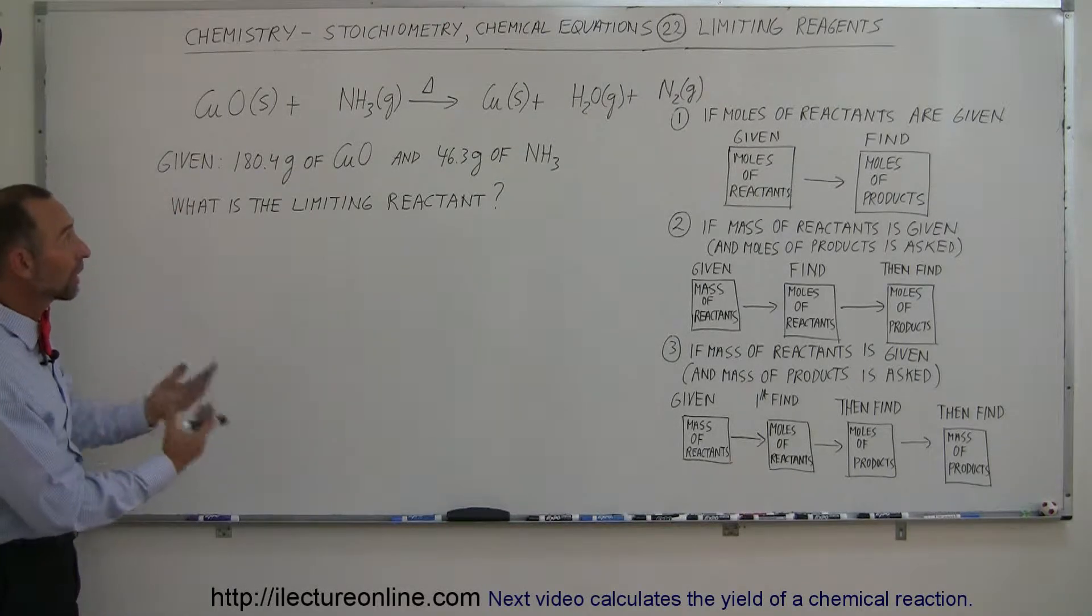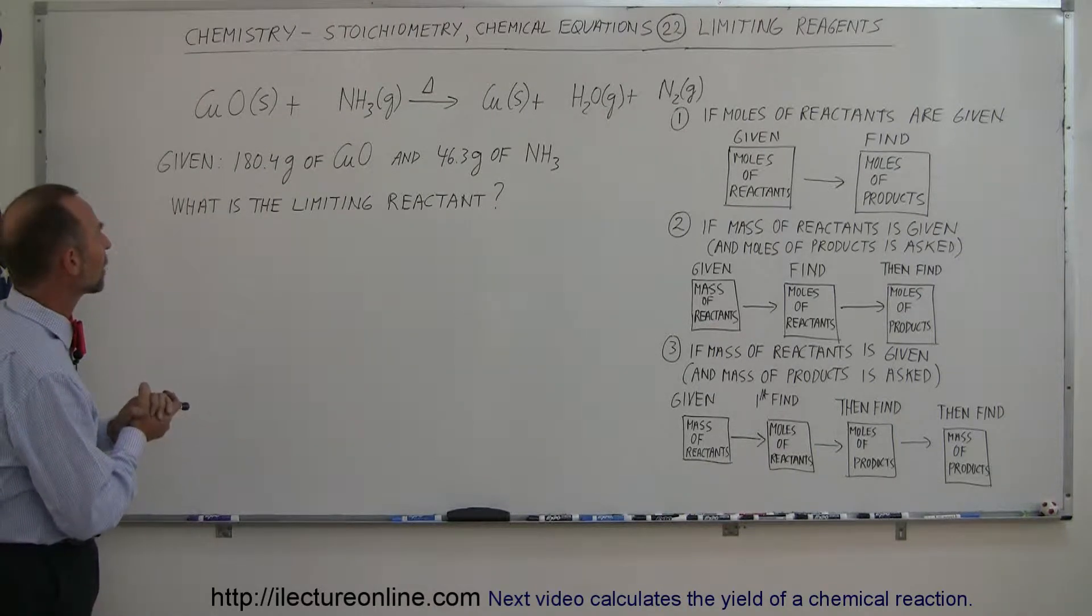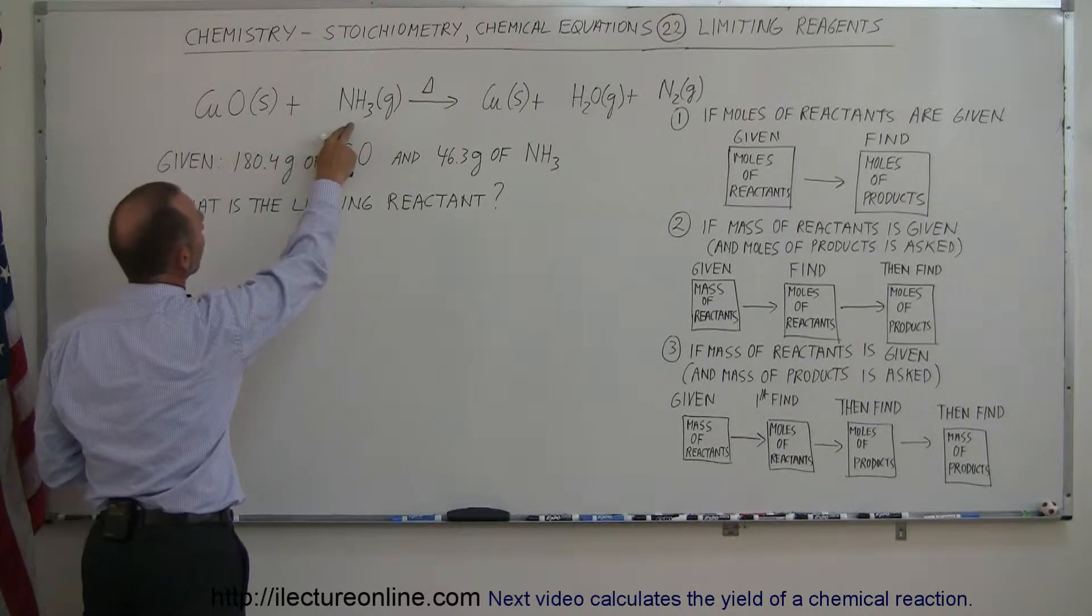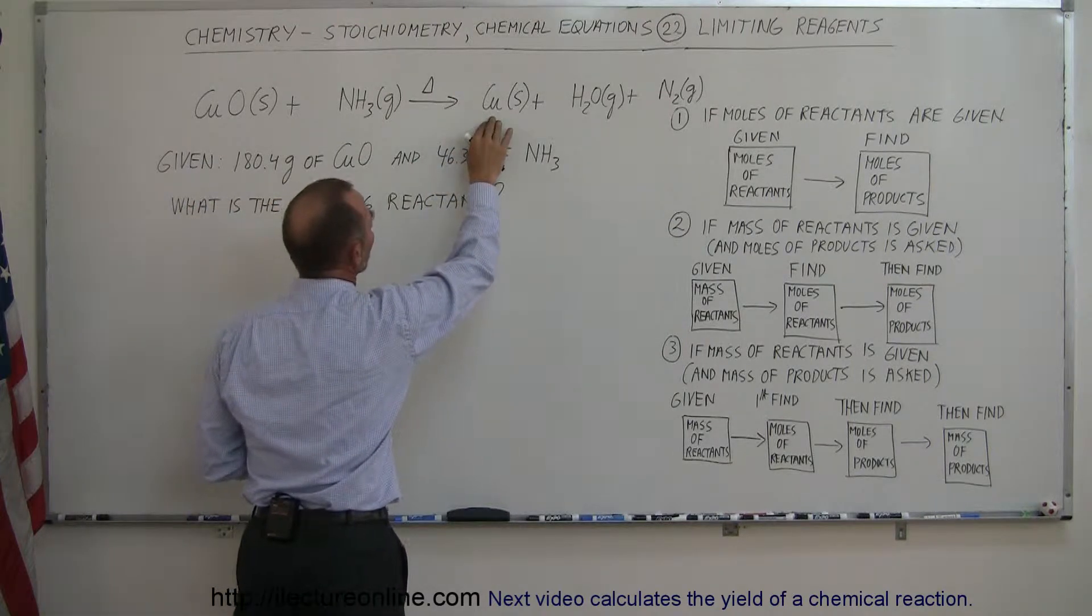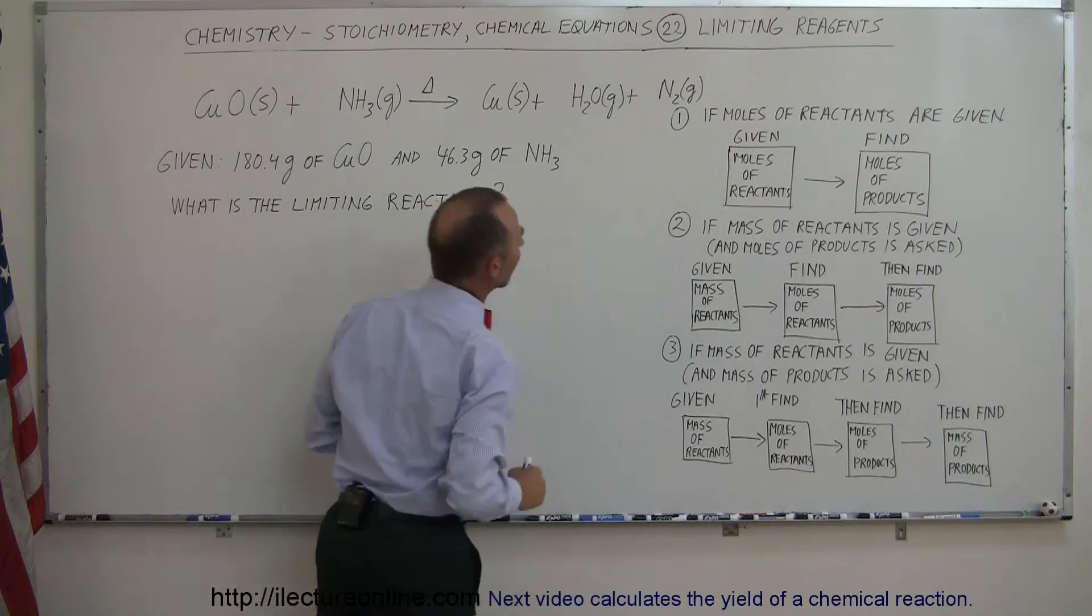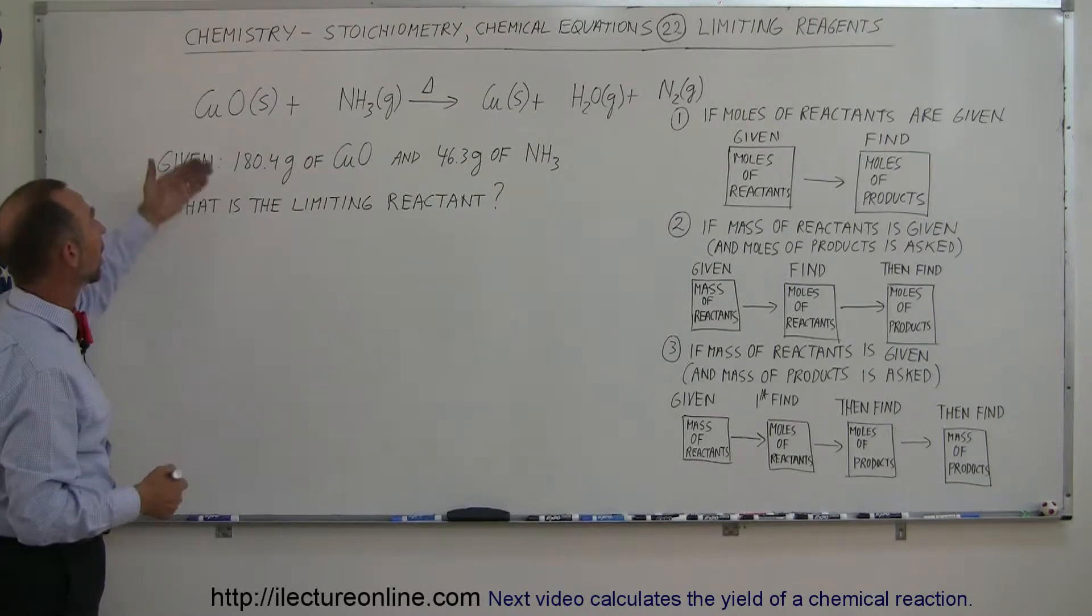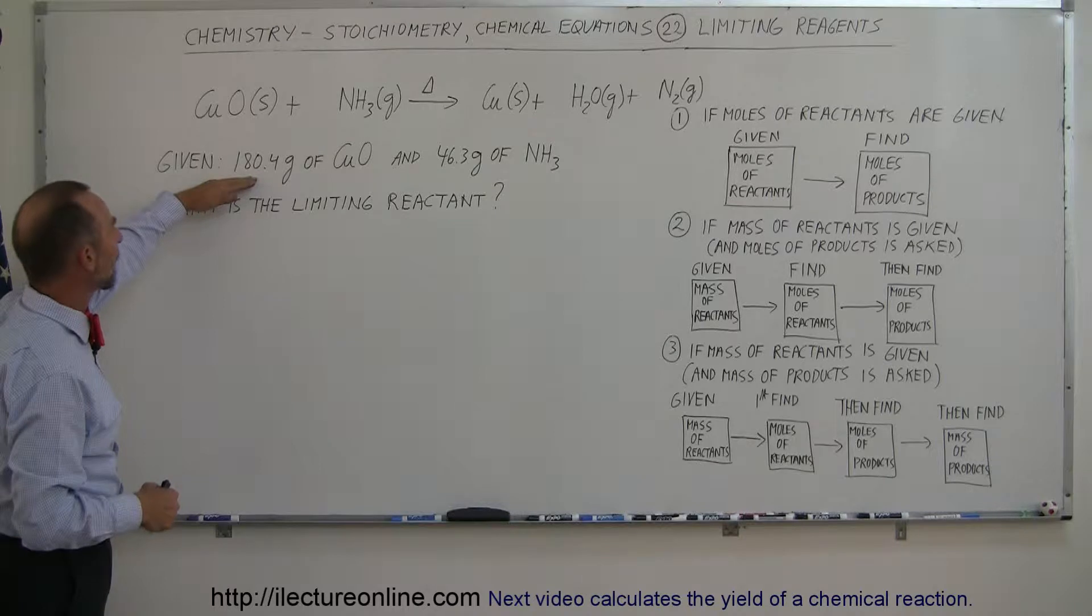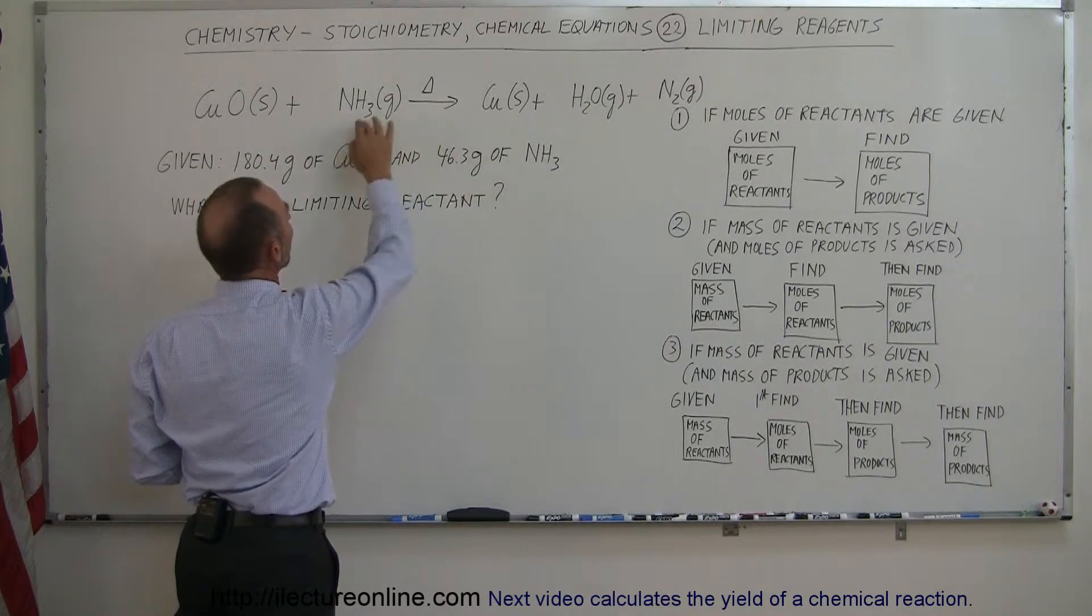Here we have another example of how to deal with chemical reactions where we may have limiting reagents. So here we have two reagents: copper oxide mixed with ammonia and heated up to result in solid copper, water vapor, and nitrogen gas. This is a way we can extract copper metal out of copper oxide. We're given that we started with 180.4 grams of copper oxide and 46.3 grams of ammonia.